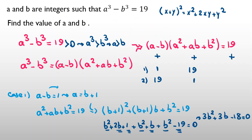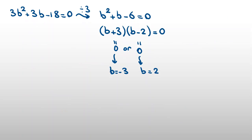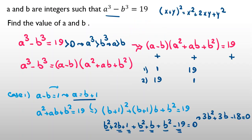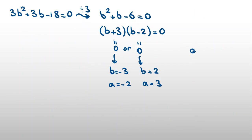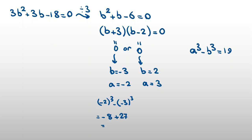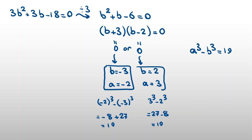Since a equals b plus 1: when b equals negative 3, a equals negative 2; when b equals 2, a equals 3. Checking the main condition a³ minus b³ equals 19: (−2)³ minus (−3)³ equals negative 8 minus (negative 27) equals negative 8 plus 27 equals 19. And 3³ minus 2³ equals 27 minus 8 equals 19. Both solutions satisfy the equation.